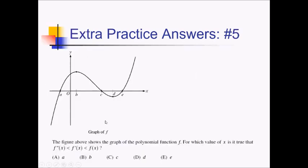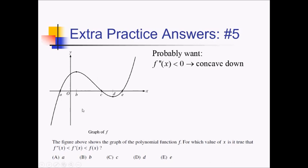On this problem, we're given the graph of f and we want to know at which of the spots A through E is it true that f double prime of x is less than f prime of x is less than f of x. Because they don't have any numerical values on here, probably what they're looking for is that one of these things is negative, another is 0, and another is positive. So we want f double prime to be negative — that is to say, we want f to be concave down. Looking at the different choices: A looks like we're on a concave down interval. B also. C is concave up, as are D and E. So C, D, and E can be eliminated based off of f double prime being negative.